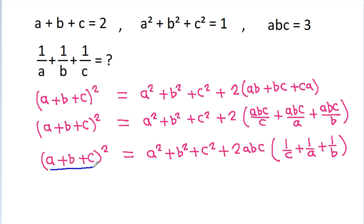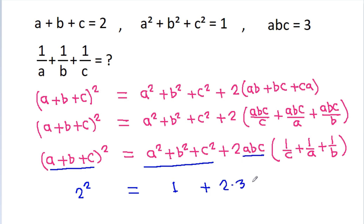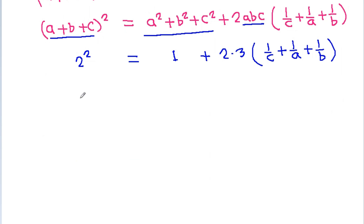And substituting the values: (a plus b plus c) squared equals a squared plus b squared plus c squared plus 2 times abc times (1 by c plus 1 by a plus 1 by b). So 4 is equal to 1 plus 2 times 3 times (1 by c plus 1 by a plus 1 by b), which gives 4 equals 1 plus 6 times (1 by a plus 1 by b plus 1 by c).